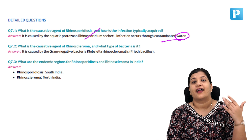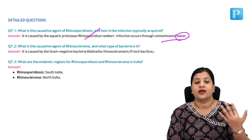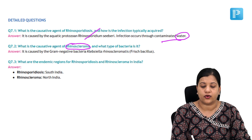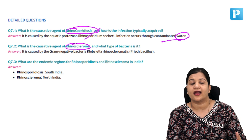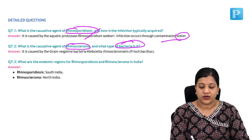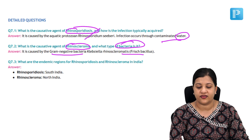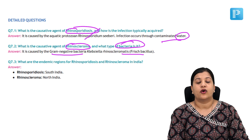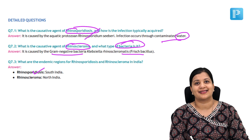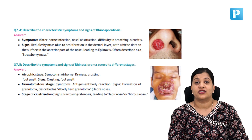You no longer have to waste time on this, so your revision is going to be quick and effective. The second question is: what is the causative organism for rhinoscleroma? We know it's a gram-negative bacteria called Klebsiella rhinoscleromatis, also called Frisch bacillus. The next question is where are these two conditions endemic — rhinosporidiosis is endemic in South India, whereas rhinoscleroma is in North India.